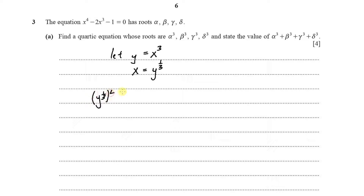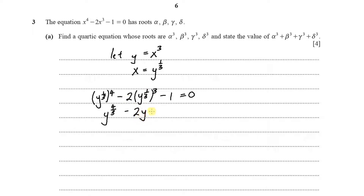After substitution, we have y to the power of four-thirds minus two times y to the power of one-third cubed, minus 1 equals 0. Simplifying, the second term becomes just 2y, giving us y to the power of four-thirds minus 2y minus 1 equals 0. We then make y to the power of four-thirds the subject: y to the power of four-thirds equals 2y plus 1.